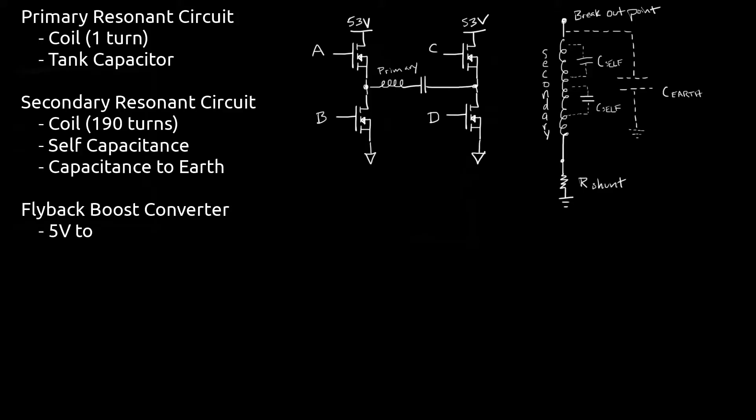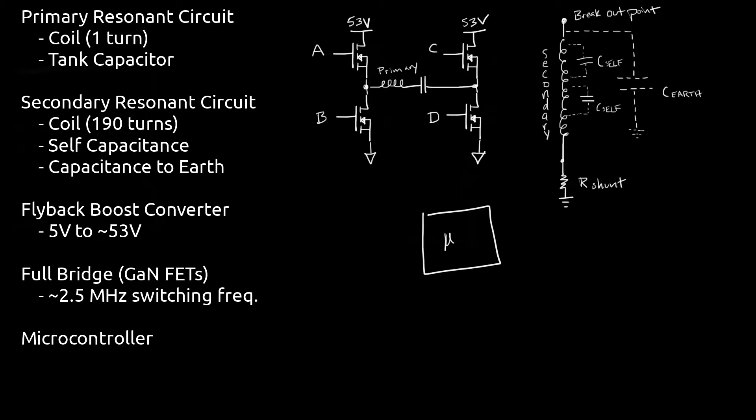Two half bridges are used to create a full bridge using GaNFETs. GaNFETs are used because of their performance at high switching frequencies. A microcontroller is used for feedback control as well as to modulate the coils in the audible frequency range based on the MIDI input coming over USB. A shunt resistor is placed in series with the secondary coil so that the microcontroller can measure the current on the secondary and compensate for changes in the secondary's resonant frequency during operation.